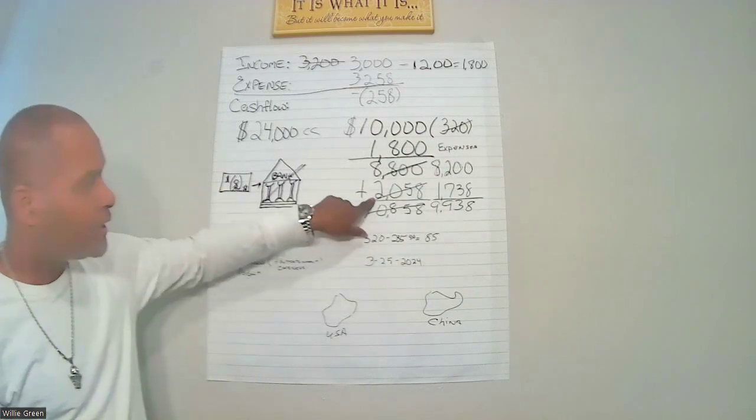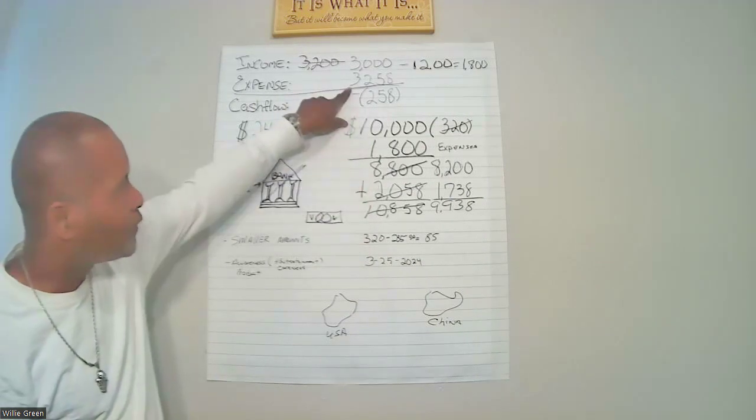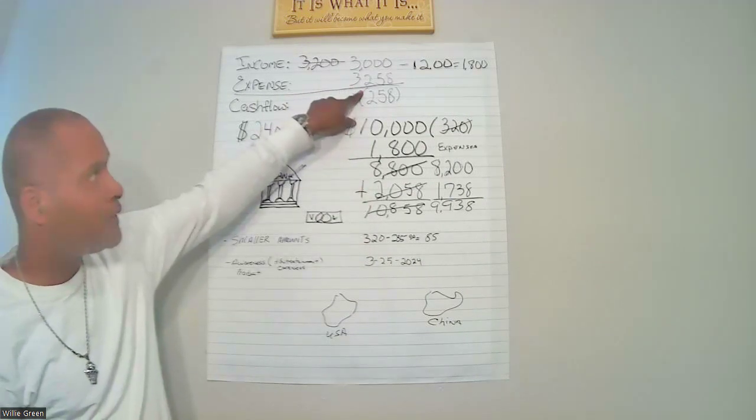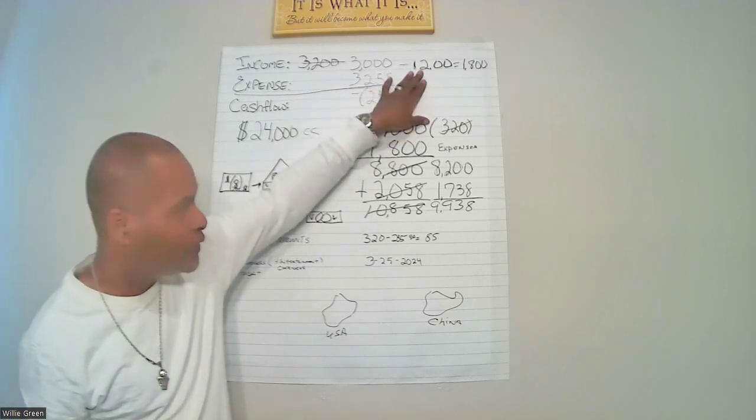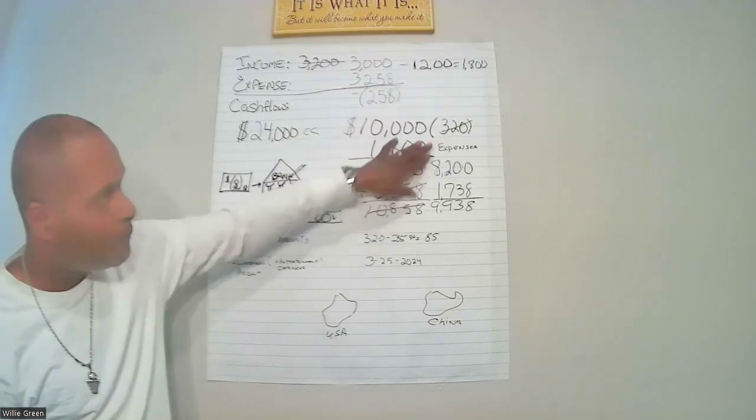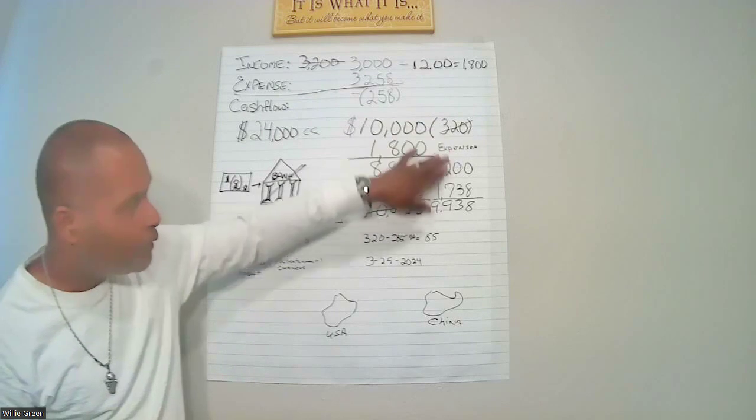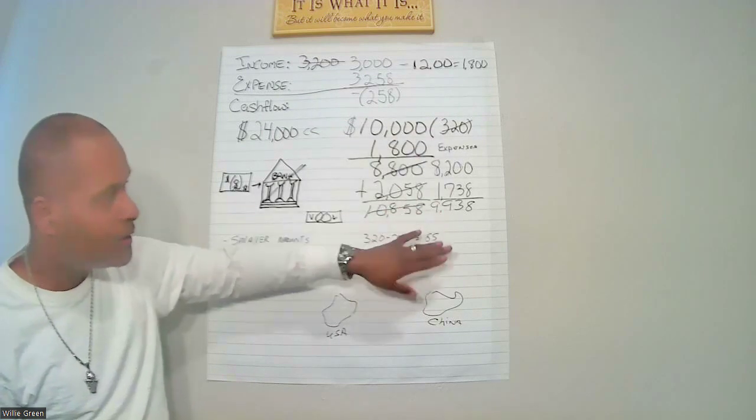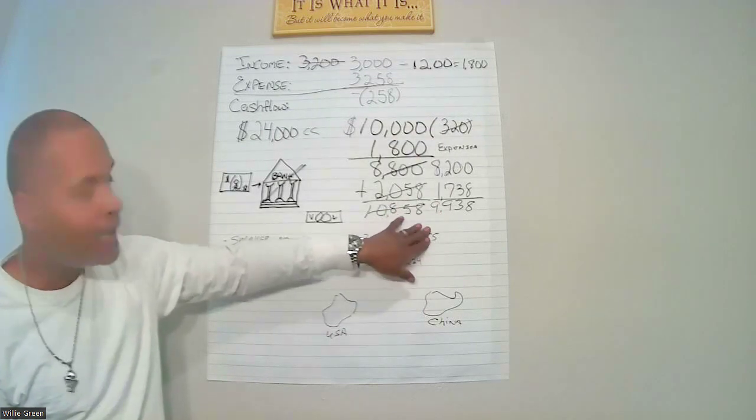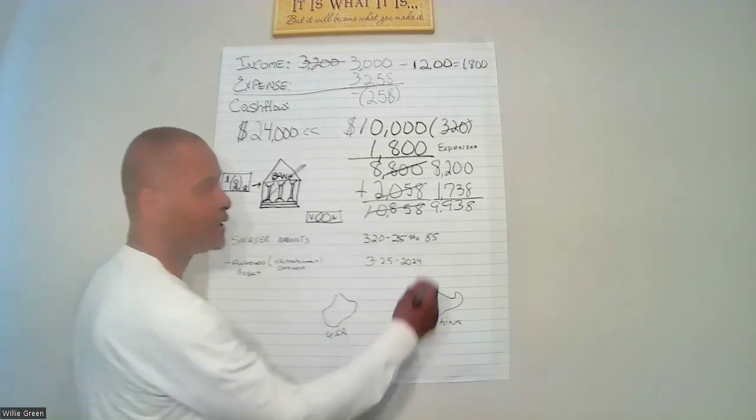And then the expenses for $3,258 minus the $1,200, and then we also minus the $320, which brought it to $1,738 and going back up and increasing.